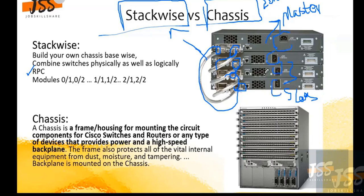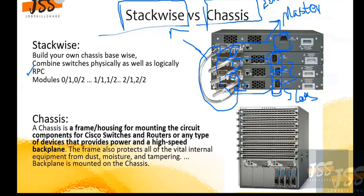If the master is down, the brain is down and everything will go down. However, it has the concept of RPC — redundant power supply cells. If one power supply is down, the others are still working. But if the master's power supply is down, the remaining switches can work only as standalone — they don't have a brain. We'll talk about memory concepts in more detail when we cover switch memory.